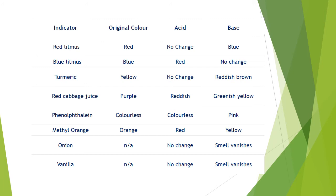Summary of indicator color changes: Red litmus is red in acidic medium with no color change, but turns blue in basic medium. Blue litmus turns red in acidic medium and shows no color change with base. Turmeric is yellow with no change in acid but reddish-brown in base. Red cabbage is purple, gives red with acid and greenish-yellow with base. Phenolphthalein is colorless in acid and pink with base. Methyl orange is orange, turns red with acid and yellow with base. Onion shows no smell change with acid but smell vanishes with base. Similarly, vanilla's smell vanishes with base.